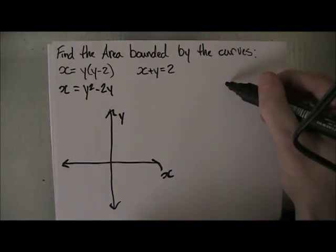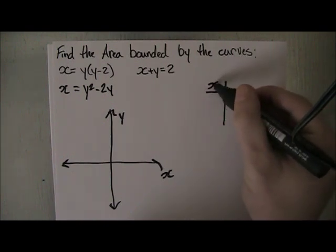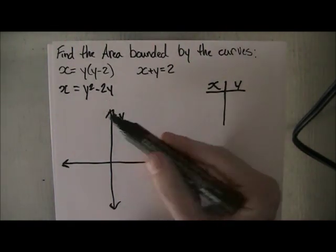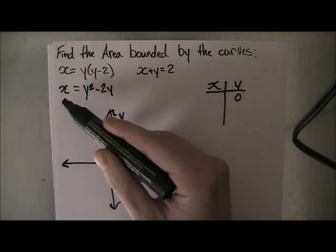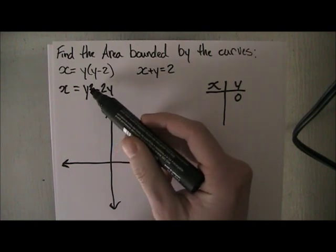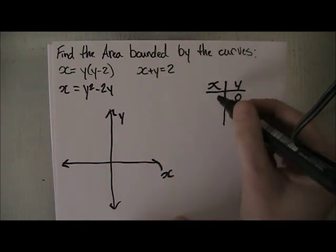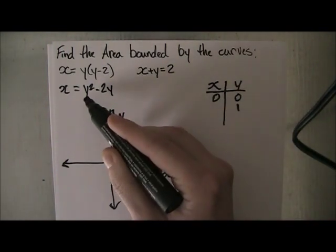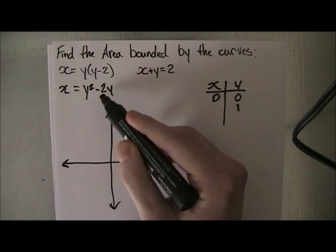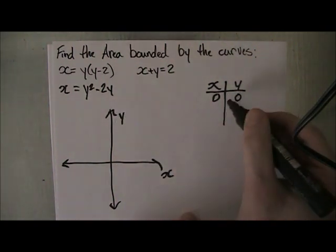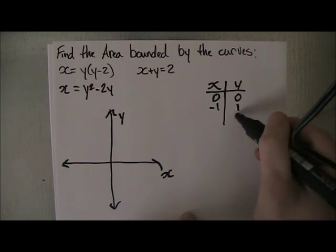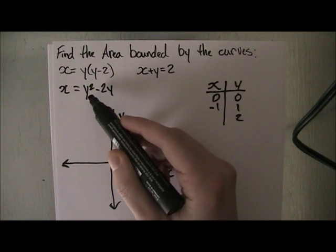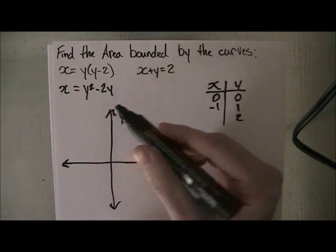So what we can do is a quick chart of x and y values, and we just plug in for y. When y is 0, x is going to be 0 because 0 squared is 0 and minus 2 times 0 is 0. When y is 1, we get 1 squared which is 1, minus 2 times 1 which is 2, so we get minus 1. When y is 2, we get 2 squared is 4, minus 2 times 2 is 4, so 4 minus 4 is 0.